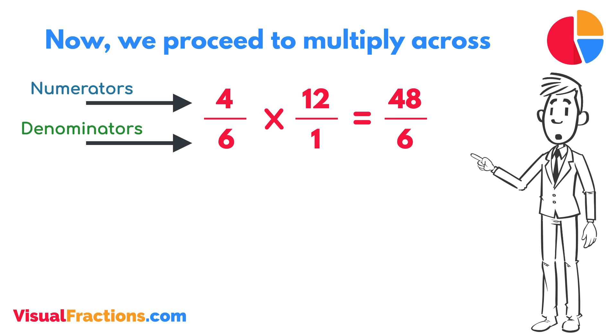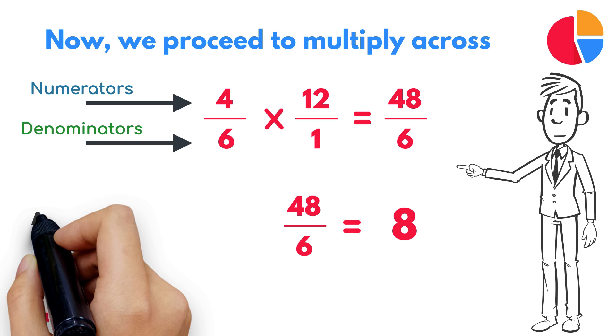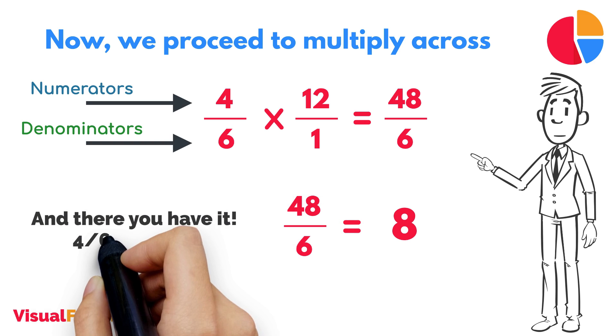To find the final answer, divide the numerator by the denominator. So, 48 divided by 6 equals 8. And there you have it, 4 sixths of 12 is 8.